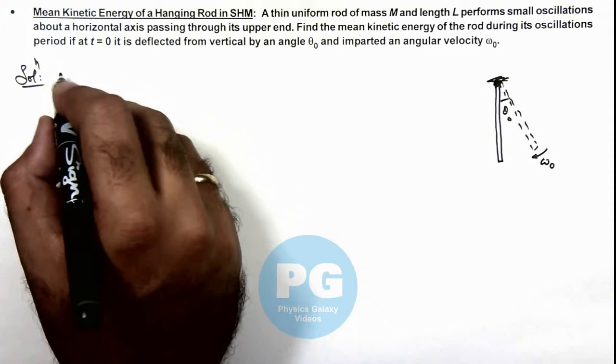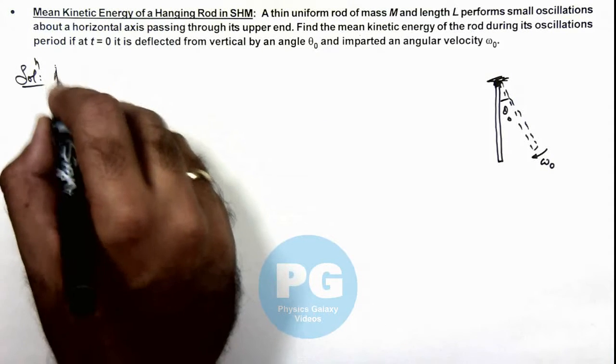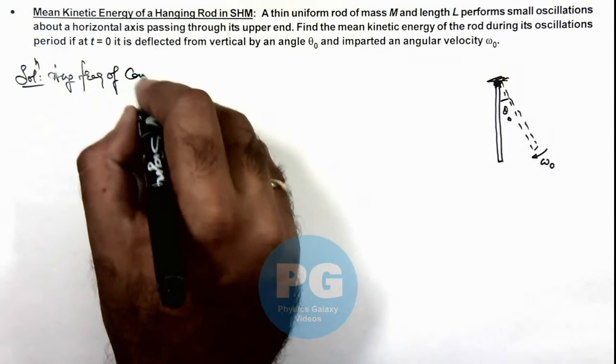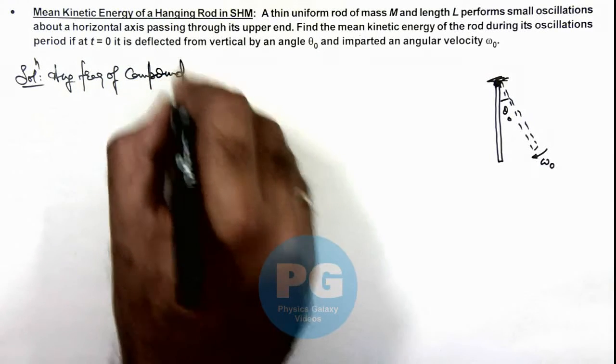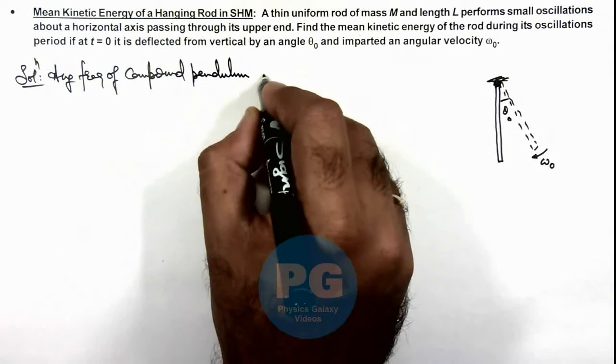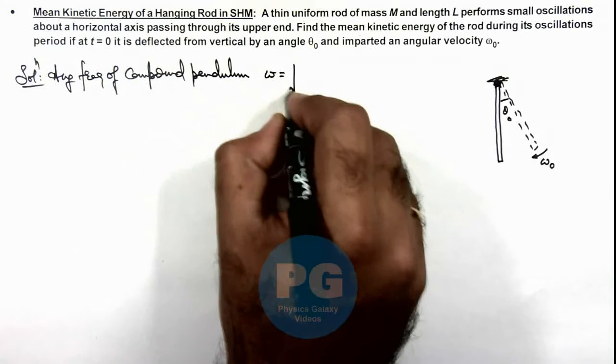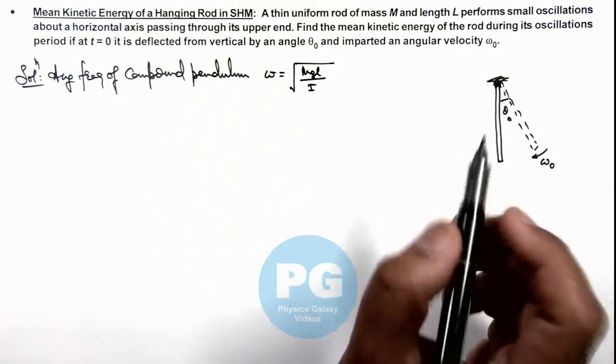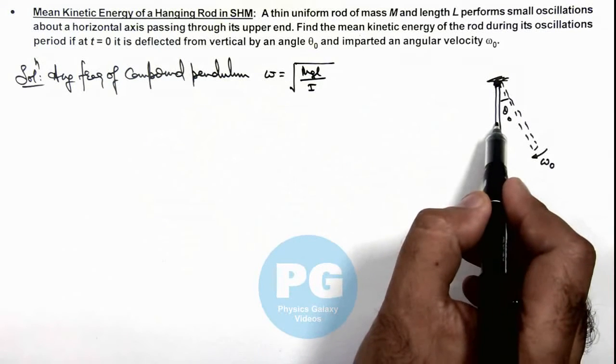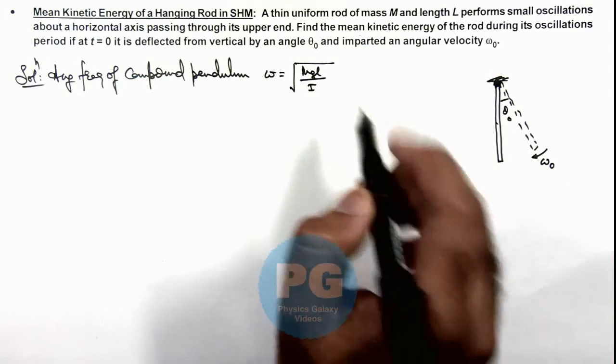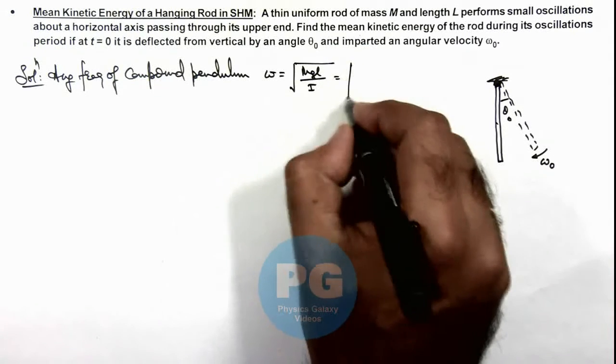We can first calculate the angular frequency of the compound pendulum. Omega is equal to root of MgL over I. Here the distance of the center of mass of the rod, as we consider the rod is uniform, will be L by 2. So we can put it as Mg times L by 2 divided by the moment of inertia.